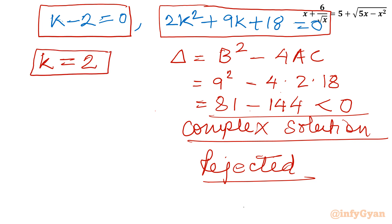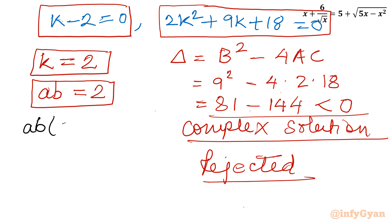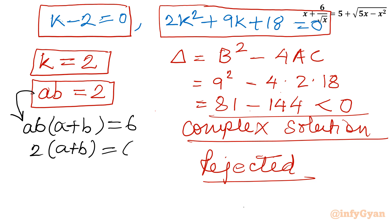So k = 2, and since k = ab, we have ab = 2. Looking back at equation 1: ab(a + b) = 6. Substituting ab = 2 gives 2(a + b) = 6, so a + b = 3.